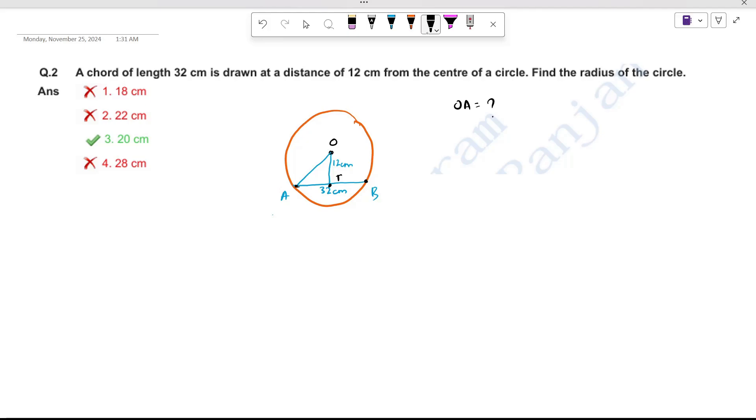When the perpendicular falls from the center to the chord, it bisects the chord. So if the total is 32 cm, this will be 16 cm. This will be 16 cm. And this will be 90 degrees.